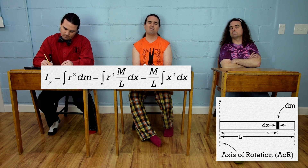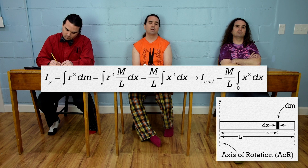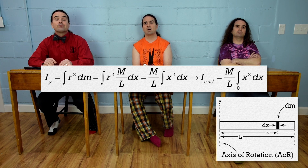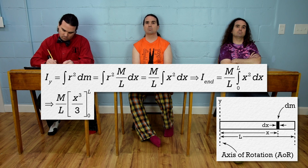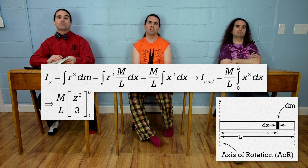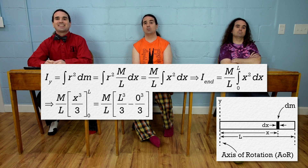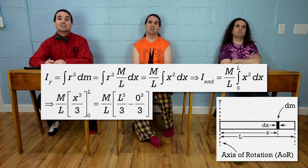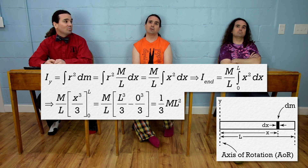The limits are now: x initial is at the axis of rotation, so x initial is zero. And x final is at the other end of the rod, so x final is the total length of the rod, L. The integral of x-squared with respect to x is x-cubed over 3 from 0 to L. Substituting in our limits gives us mass over length times L-cubed over 3 minus 0. One L cancels out and the rotational inertia of a uniform rigid rod about one end equals one-third times the mass of the rod times the length of the rod squared.